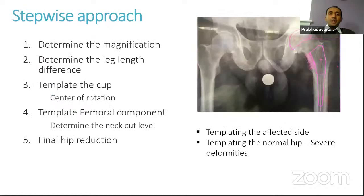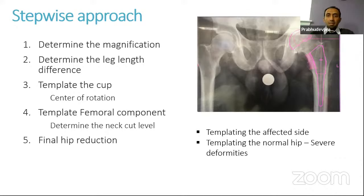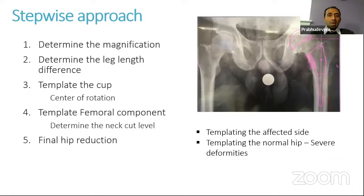Now let's look at how we do the template using a stepwise approach. The first step is to determine the magnification, which is very important for accurate implant sizing. Next, determine the leg length difference between the two sides. Then template the cup, followed by templating of the femoral component, and finally the planned hip reduction. We typically do templating on the affected side, but sometimes deformity can be so severe that templating on the normal side is a better option.